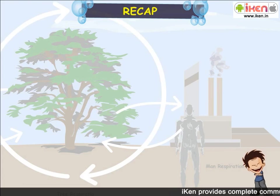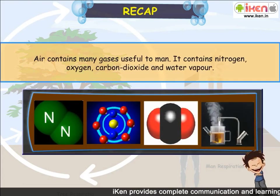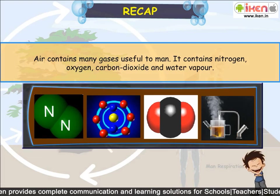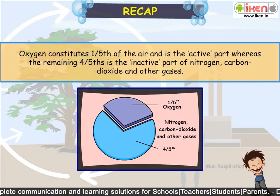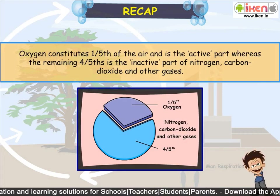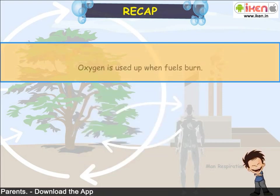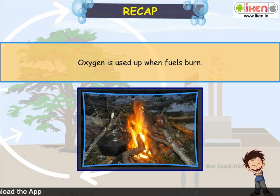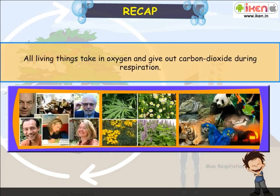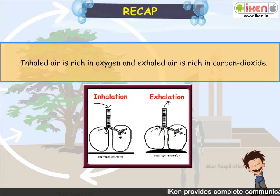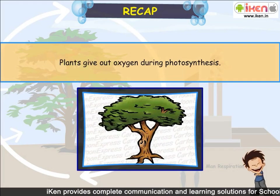Quick recap: Air contains many gases useful to man — nitrogen, oxygen, carbon dioxide, and water vapor. Oxygen constitutes one-fifth of the air and is the active part, whereas the remaining four-fifths is the inactive part made up of nitrogen, carbon dioxide, and other gases. Oxygen is used up when fuels burn. All living things take in oxygen and give out carbon dioxide during respiration. Inhaled air is rich in oxygen and exhaled air is rich in carbon dioxide. Plants give out oxygen during photosynthesis.